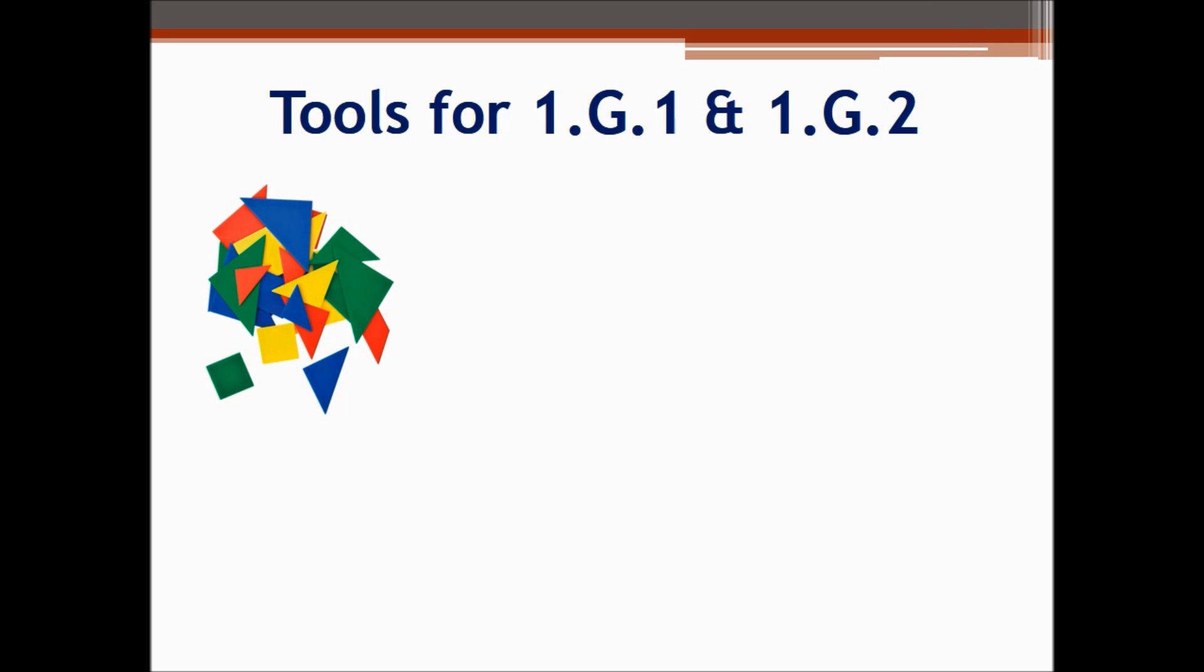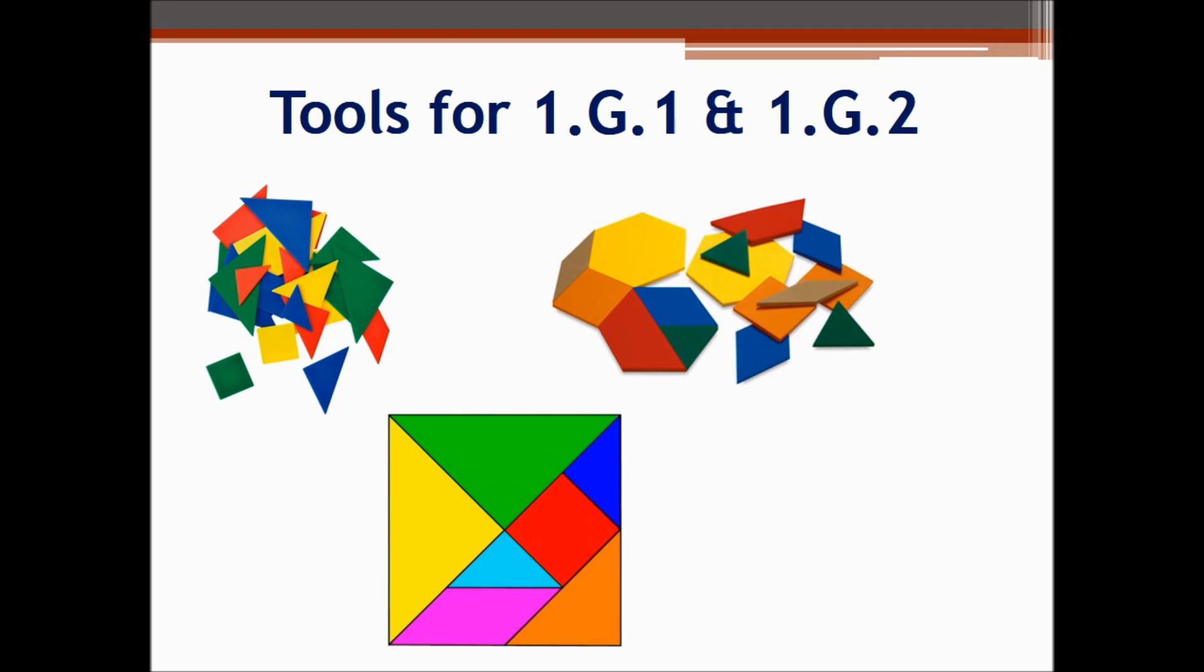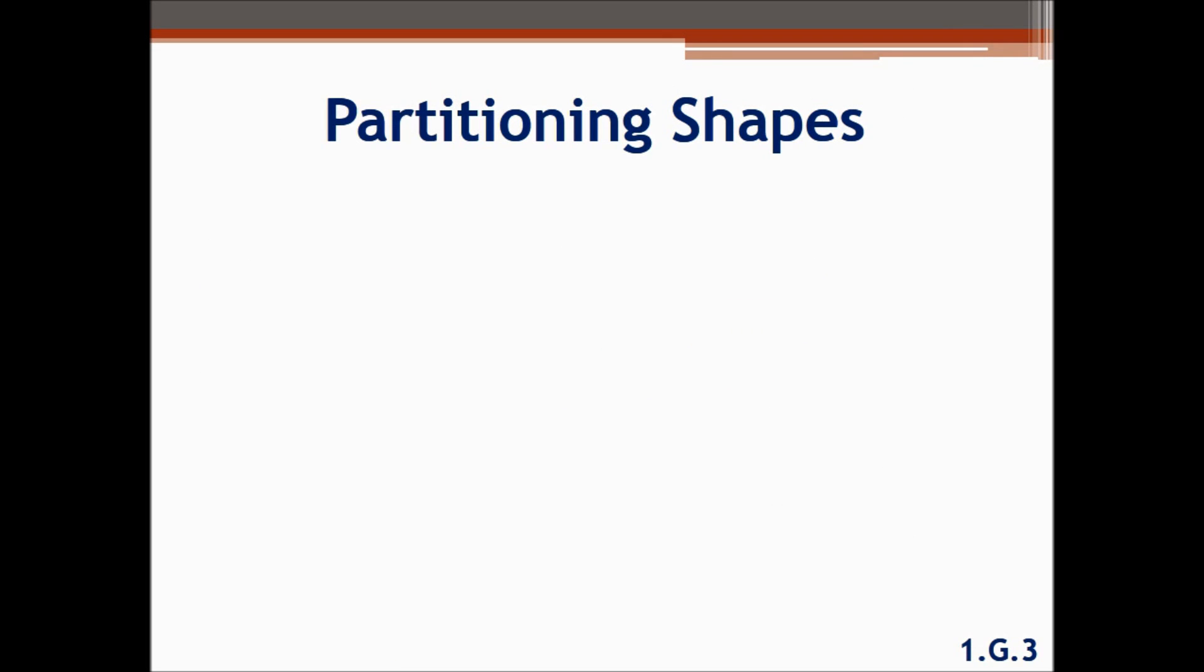Attribute blocks are a great tool for both sorting and composing shapes. Students need to have plenty of experiences sorting to understand how shapes are similar and different. Pattern blocks and tangrams are great tools for composing shapes. And geoboards are appropriate tools for constructing shapes as students learn their defining attributes.